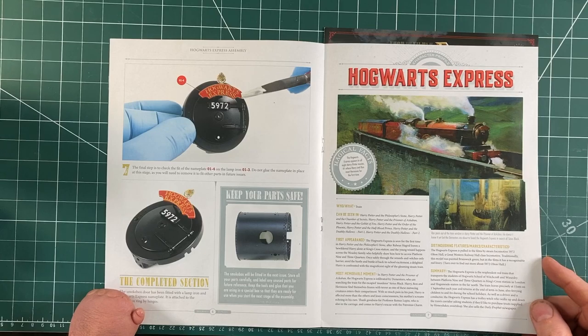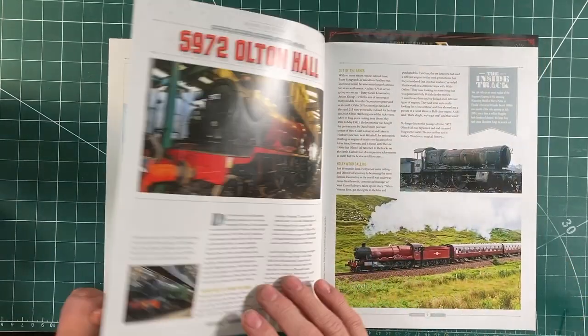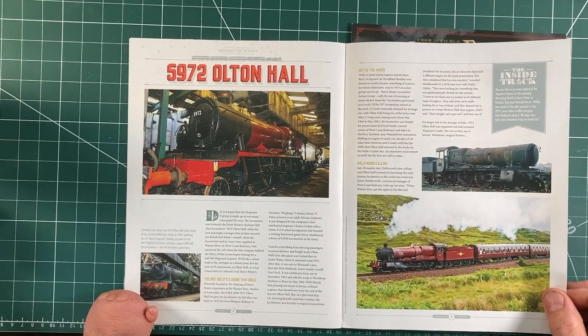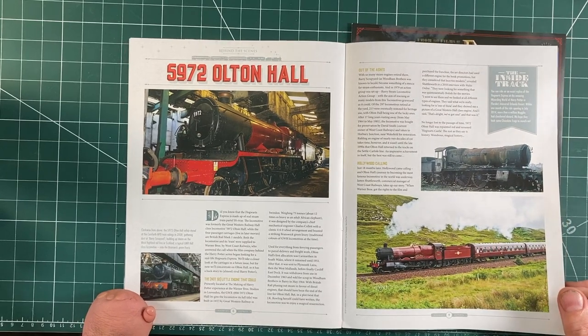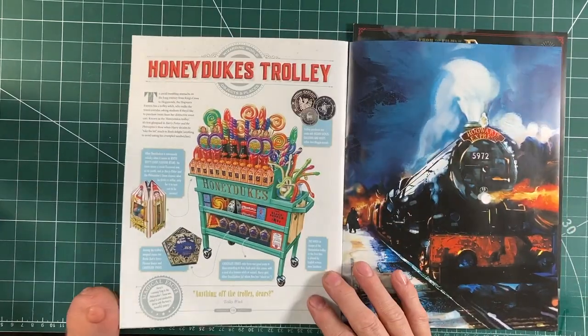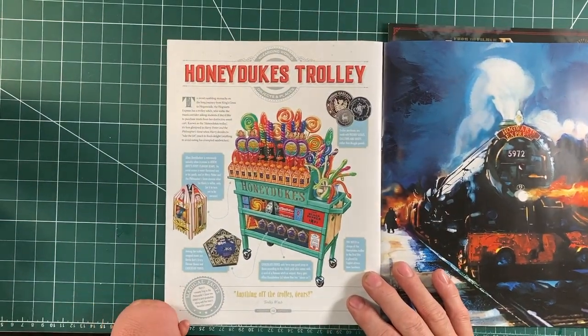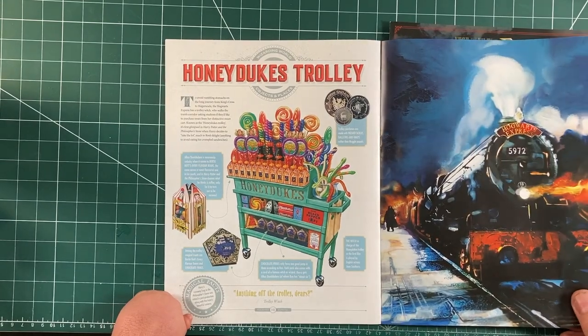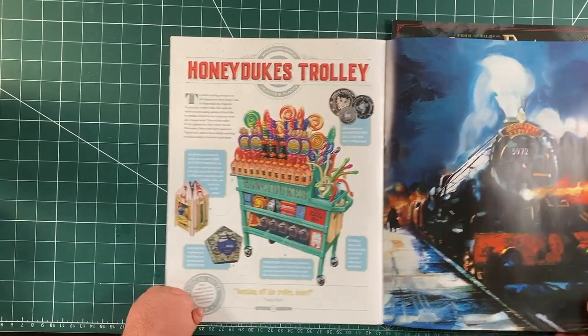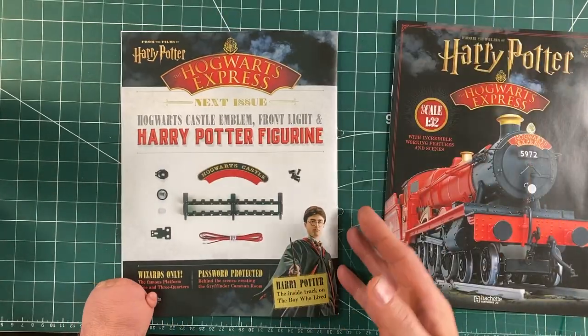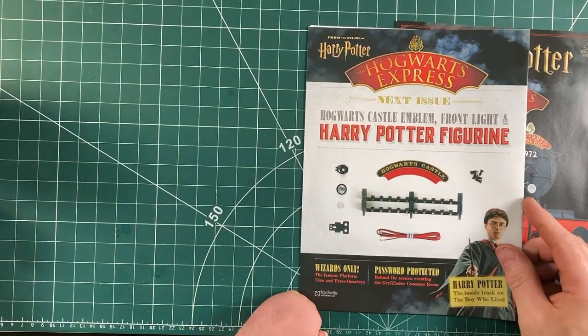And then once finished, it should be looking like that. Then an article about Hogwarts Express, 5972 Alton Hall, which is the train I believe they used for the filming. And an article about Honeydukes trolley, where all the sweets came from. Nice little picture of the Hogwarts Express.